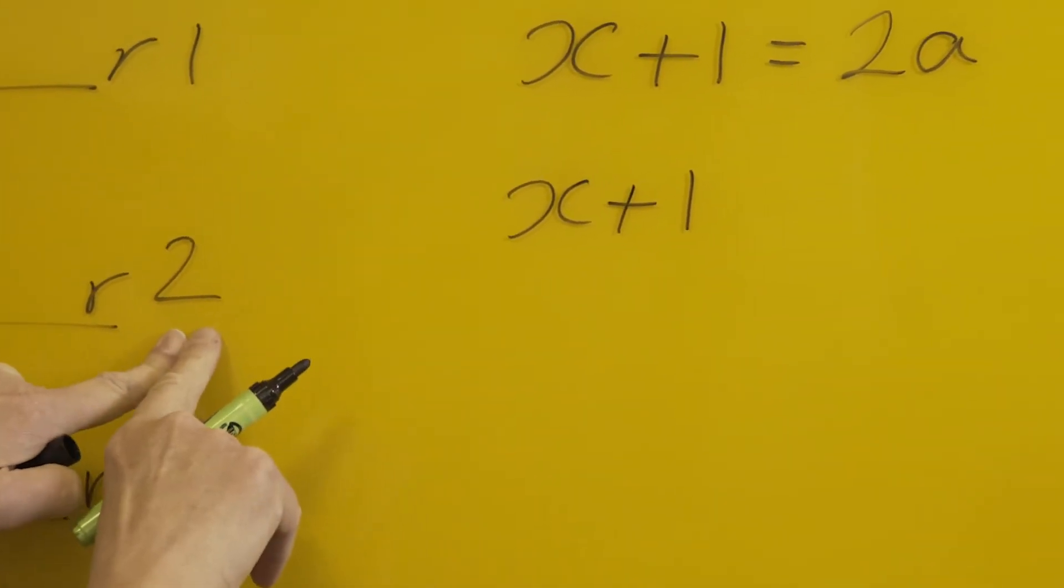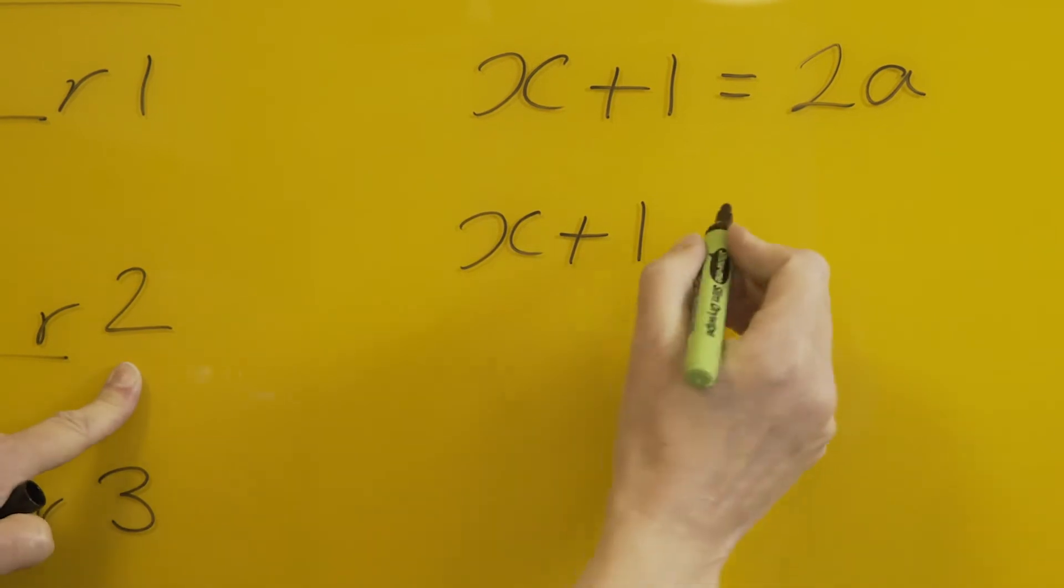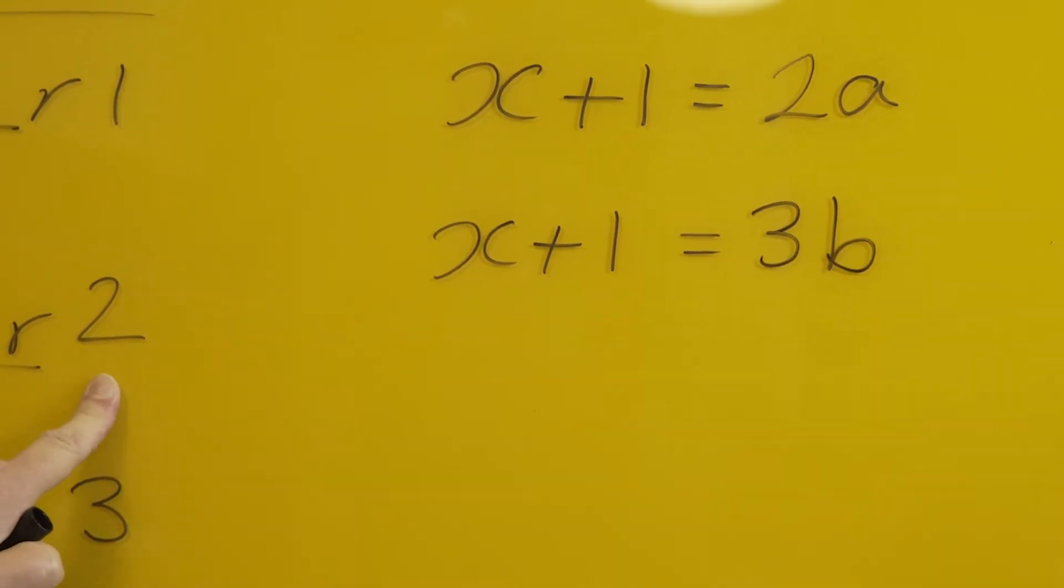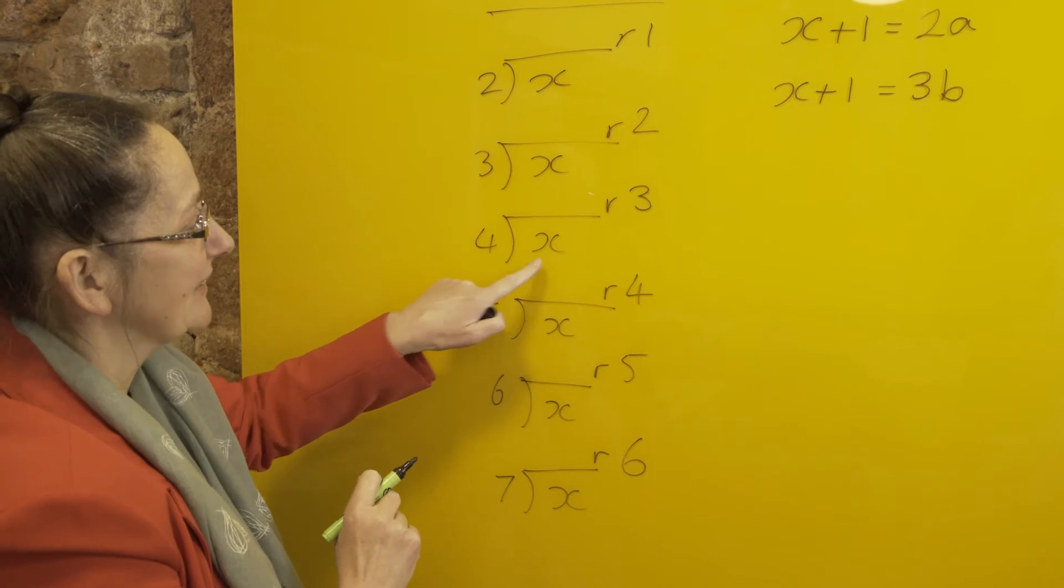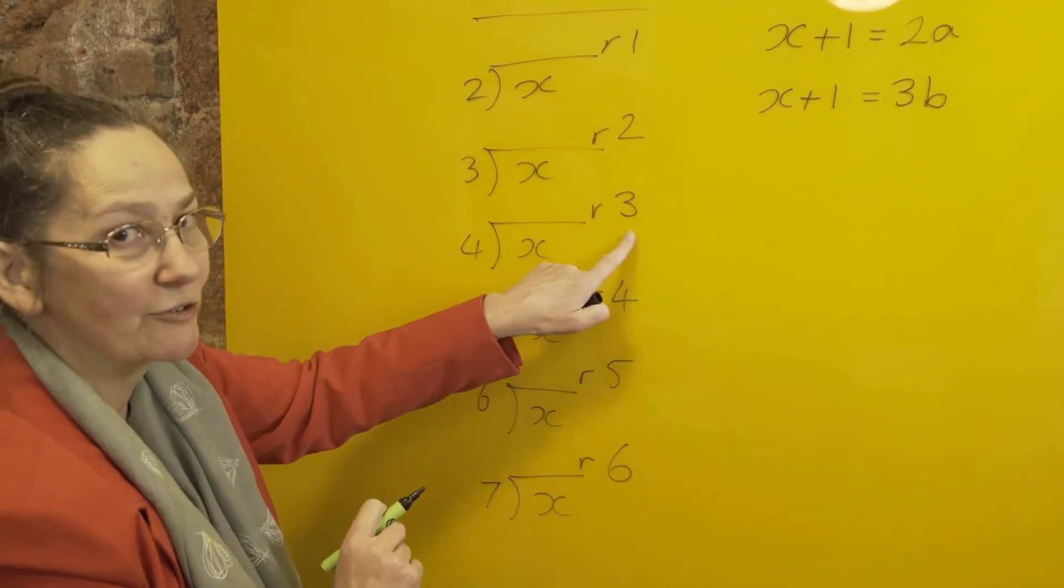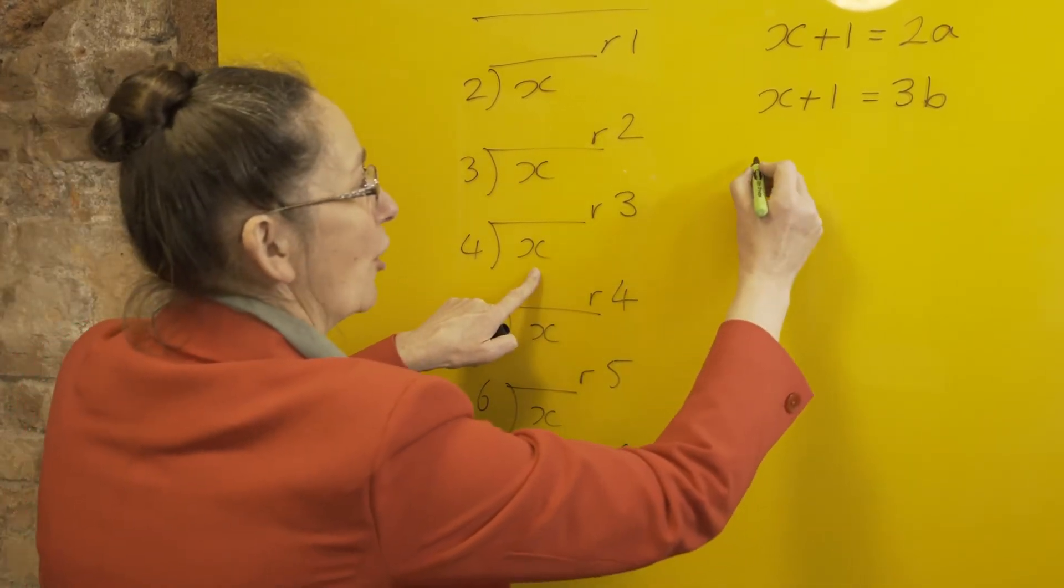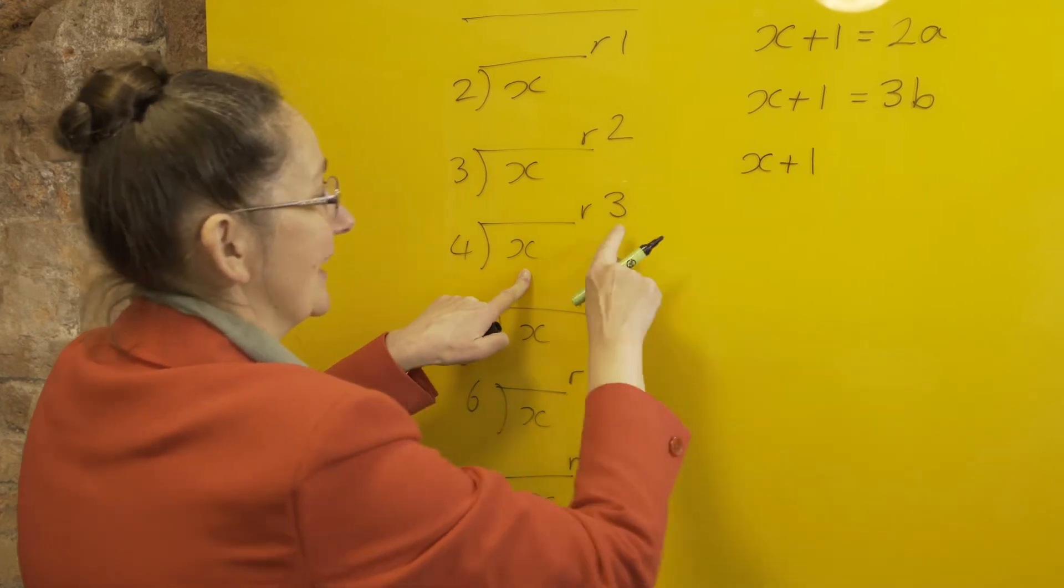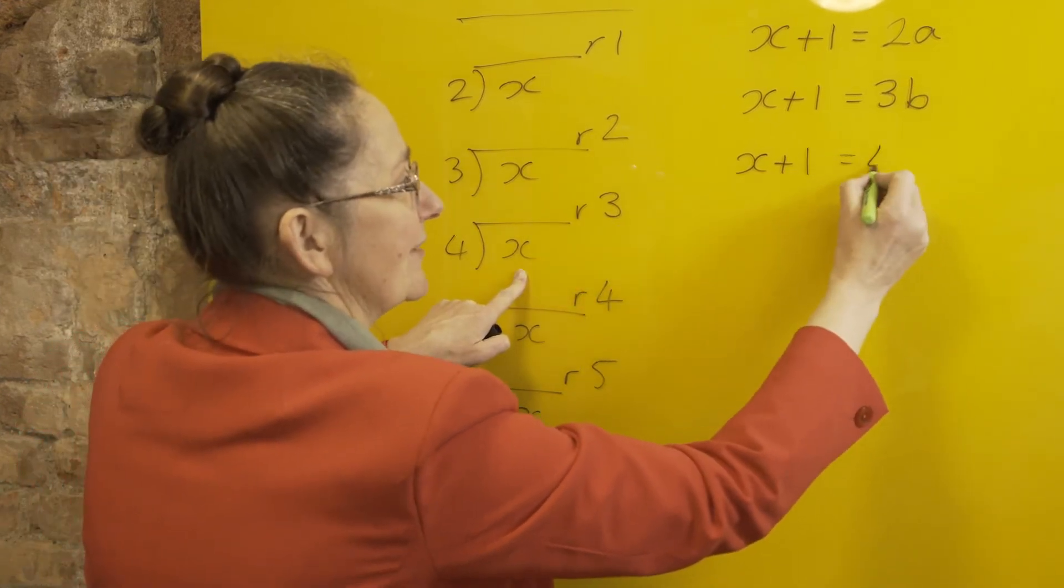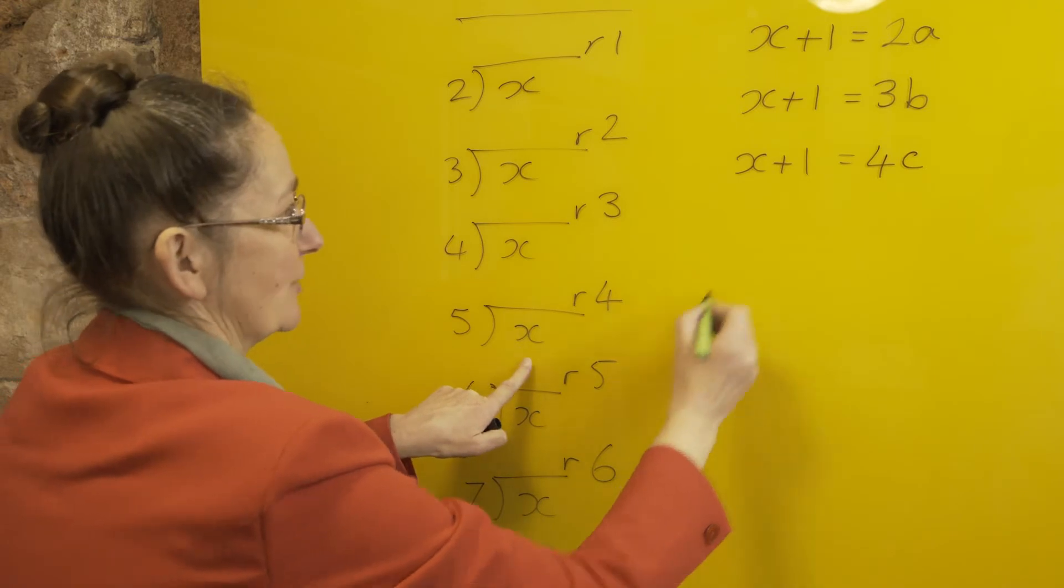If I do x divided by 4, there's a remainder of 3. So if I add 1 on, then it'll be a multiple of 4. In the same way, if I add 1 onto x, it must be a multiple of 5.